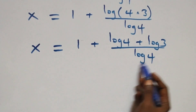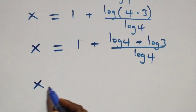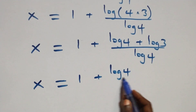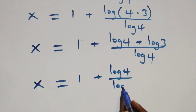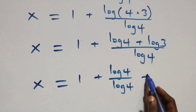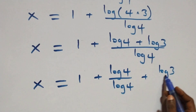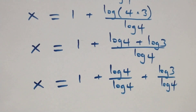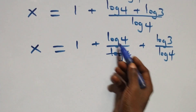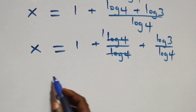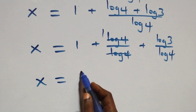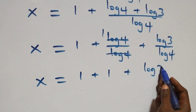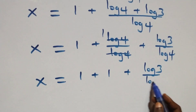Then here, we separate this into two fractions. And what we have here becomes x equals to 1 plus log 4 over log 4 plus log 3 over log 4. We have log 4 cancelling each other, leaving one, which gives x equals to 1 plus 1 plus log 3 over log 4.